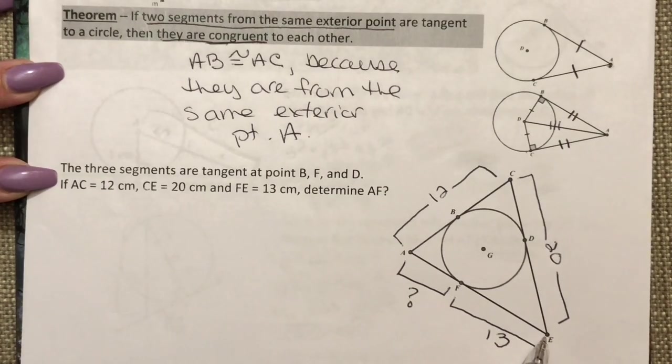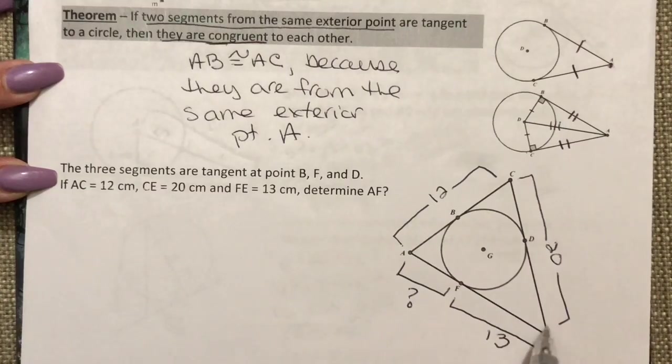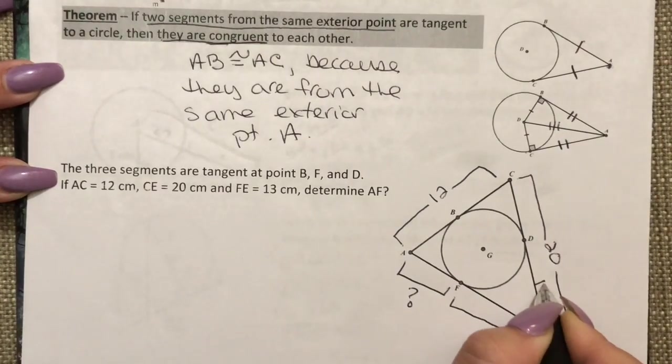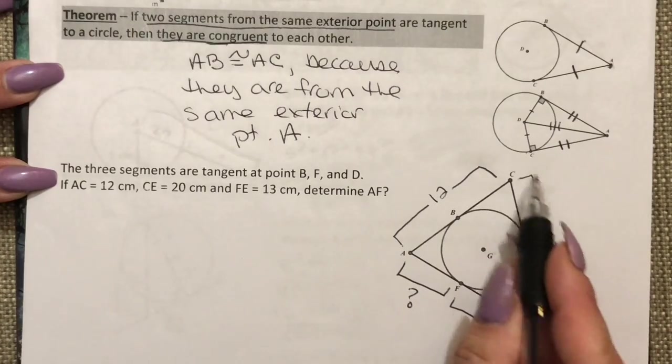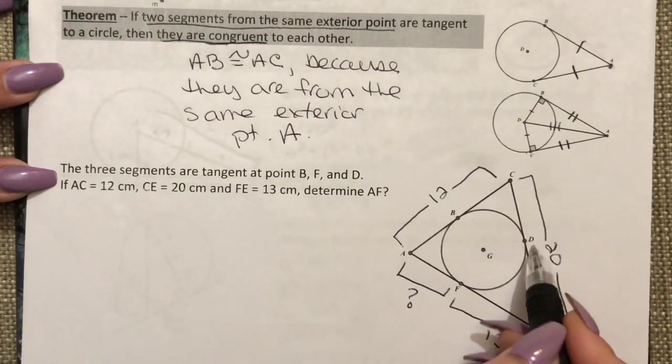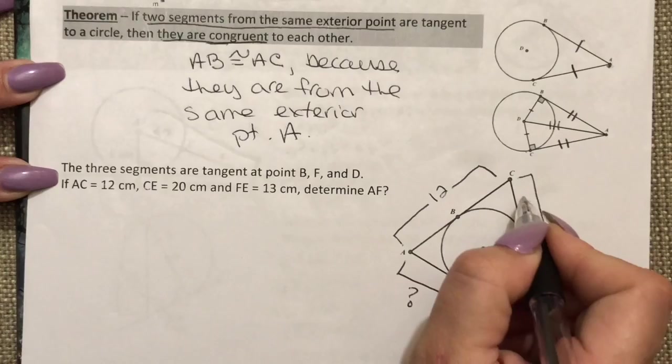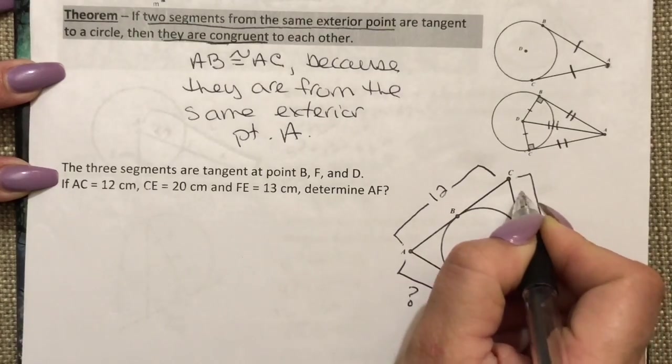And I'm coming from this exterior point which is E. Well that means from E to D must also be 13. If this whole segment is 20 and this piece is 13 well then this piece must be 7.